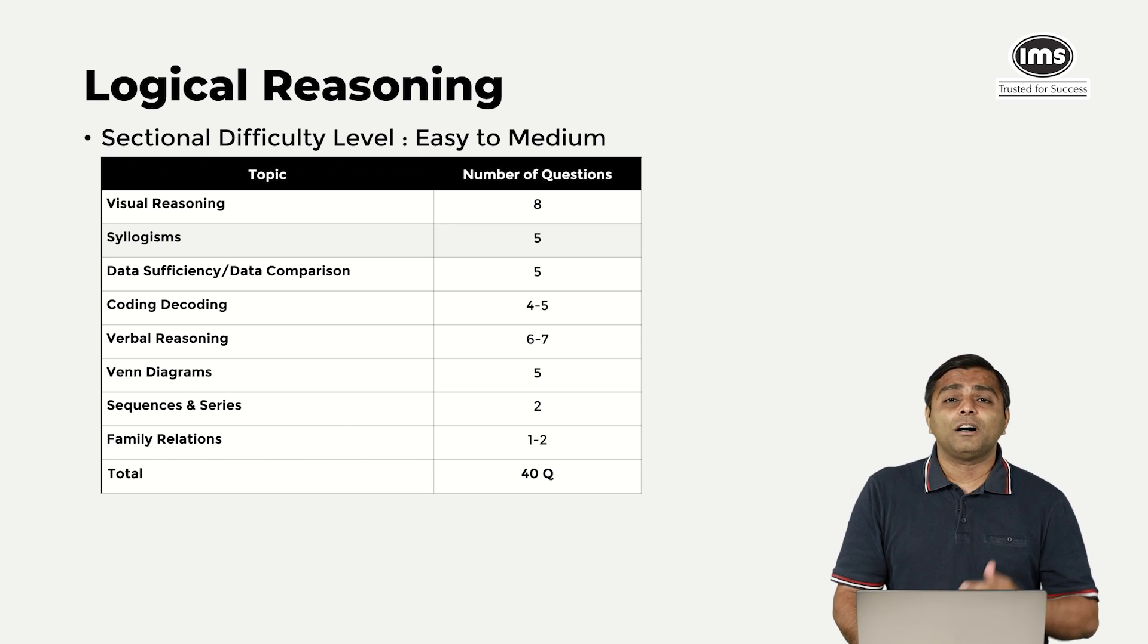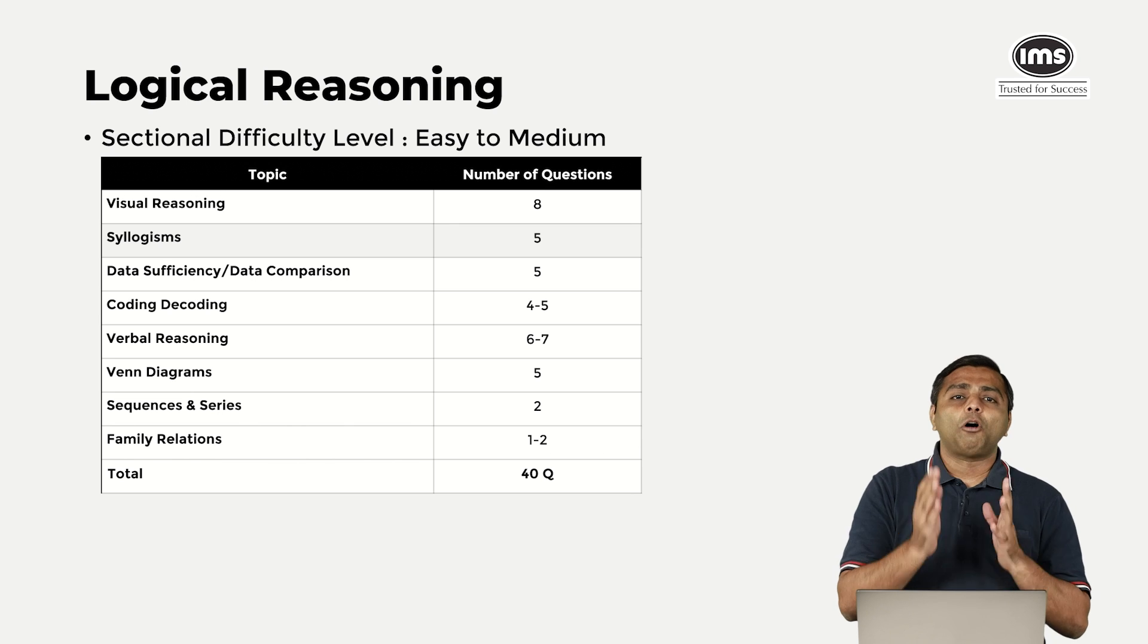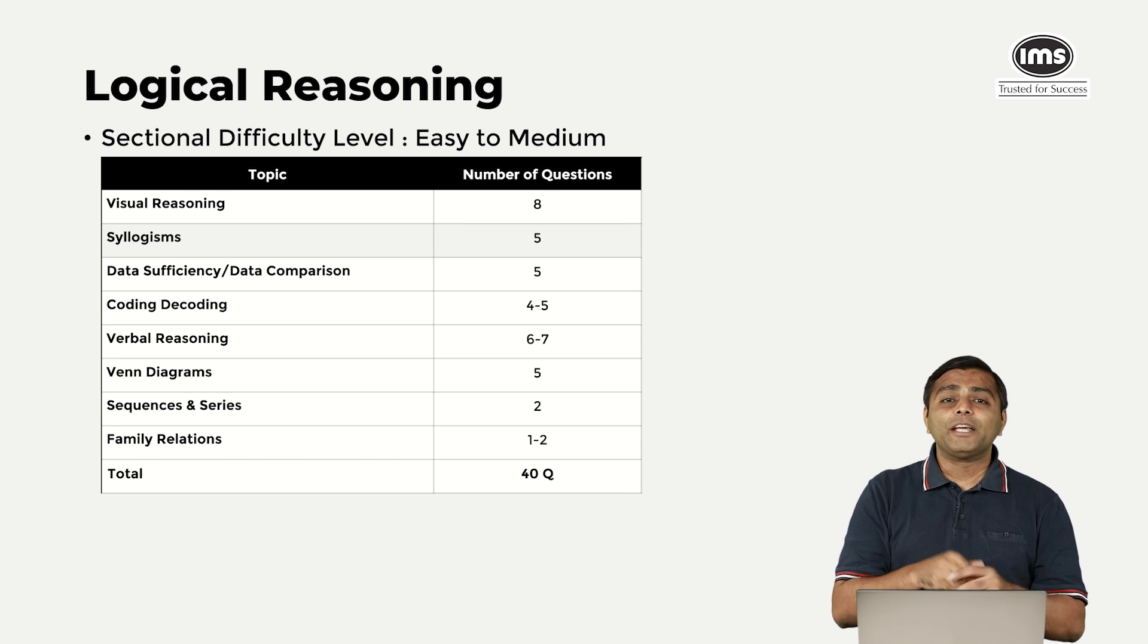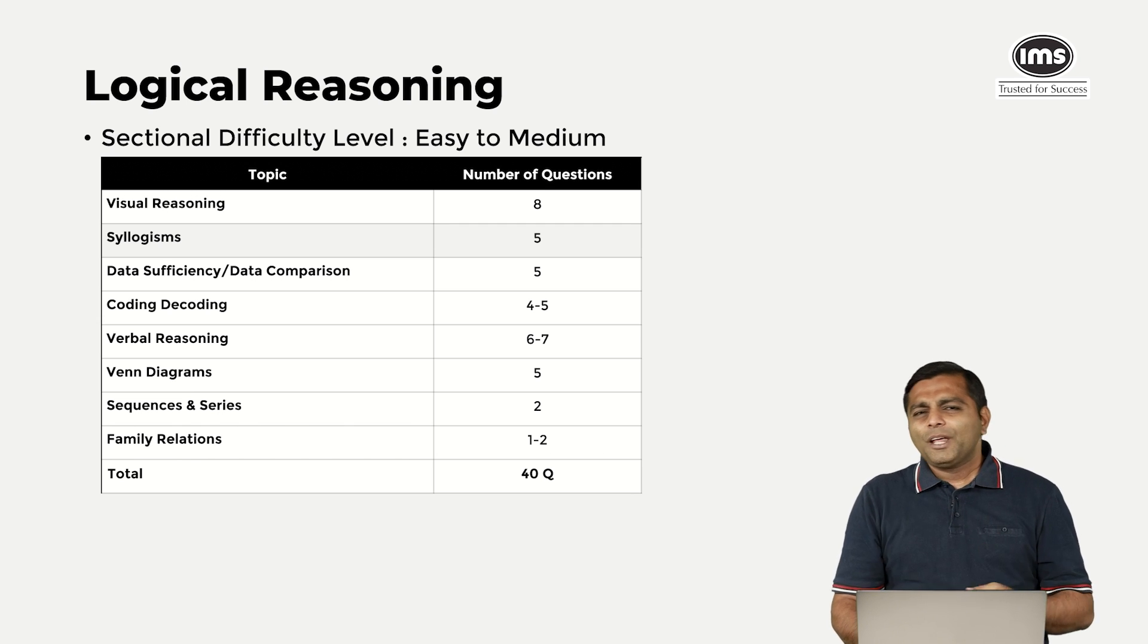This year, visual reasoning questions, which started last year, are coming this year also, and a good 6 to 8 questions is what most of our students have reported, and they are easy. If you practice the two to three basic types of visual reasoning like the odd one out or completing the series or even paper folding or cube, you should be able to easily do these eight questions. Syllogisms, as always, are simple and the normal types, nothing out of the ordinary. Five questions there. The third topic, data sufficiency or data comparison, is one thing that you have to be a little choosy about. Don't blindly go and attempt all of these five questions. They may just take a lot of your time because they are going to be calculation intensive. So just pick your questions right, which questions you want to attempt. Coding decoding, verbal reasoning, Venn diagrams, all are absolutely as what you have otherwise been practicing, so nothing really out of the ordinary.